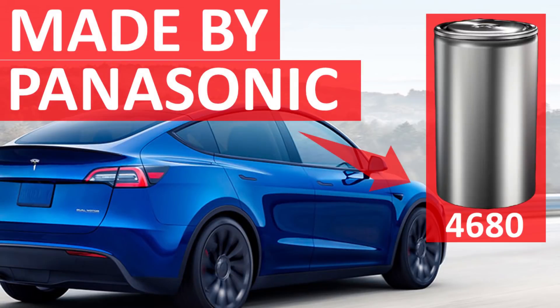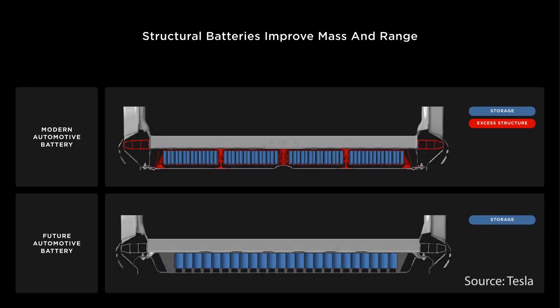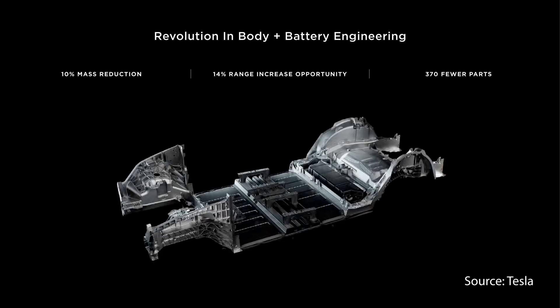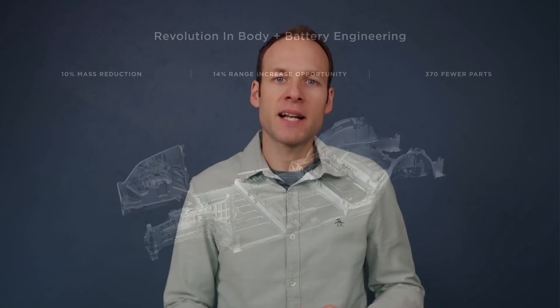In a recent video I published about Panasonic making 4680 battery cells for Tesla, I talked about Tesla's new structural battery pack with a front and rear casting and the structural battery pack in the middle. I discussed how much more sense it would make for Tesla to start producing the 4680 battery cells even if it didn't have the same chemistry or manufacturing process.